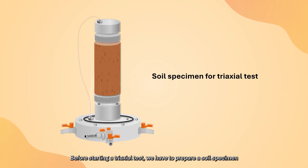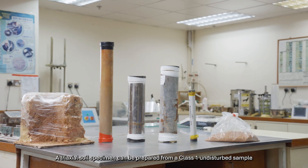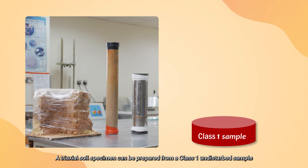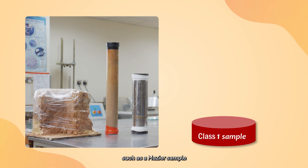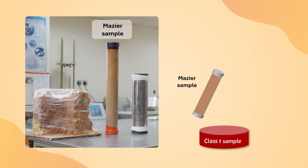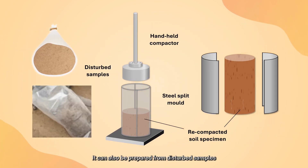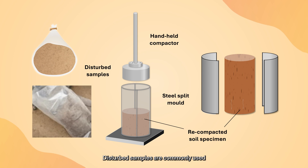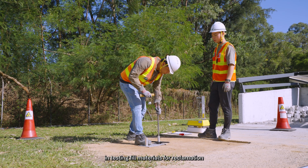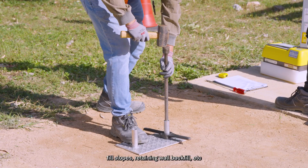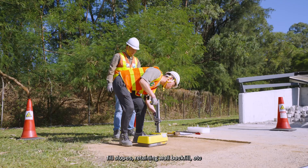Before starting a triaxial test we have to prepare a soil specimen. A triaxial soil specimen can be prepared from a Class 1 undisturbed sample such as a Mazier sample, piston sample or a block sample obtained from ground investigation. It can also be prepared from disturbed samples such as recompacted or remoulded samples, which are commonly used in testing fill materials for reclamation, fill slopes, retaining wall backfill, etc.